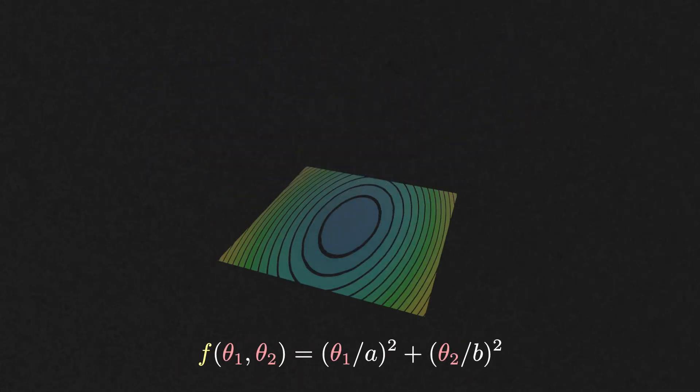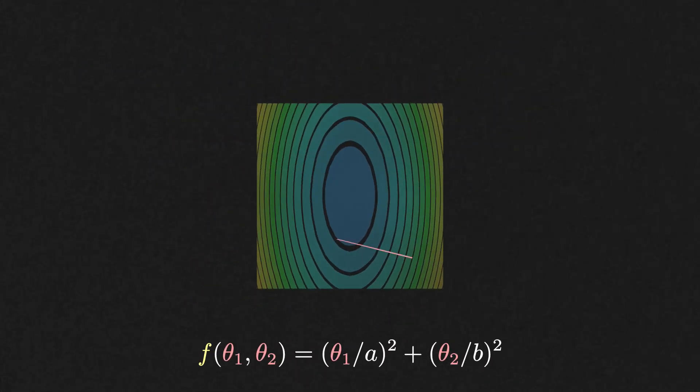Take a quadratic function and apply gradient descent to find its minimum. One thing that you will notice immediately is that it bounces around.